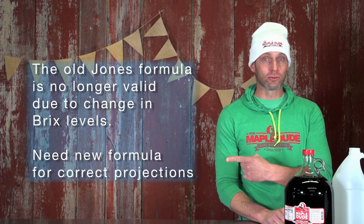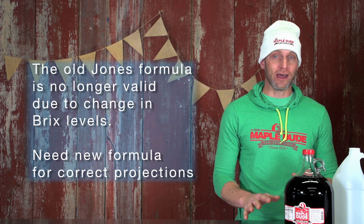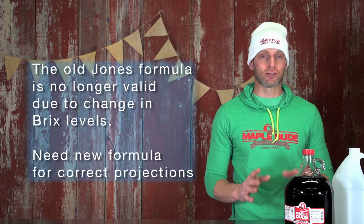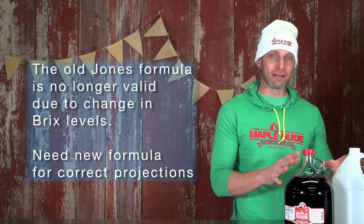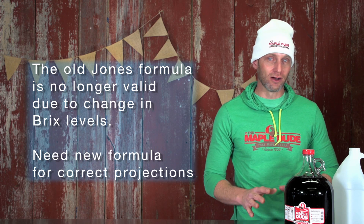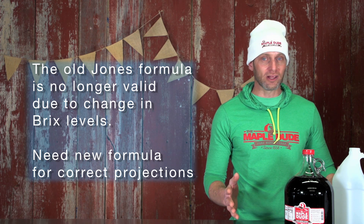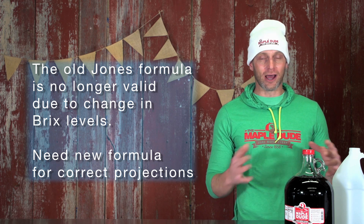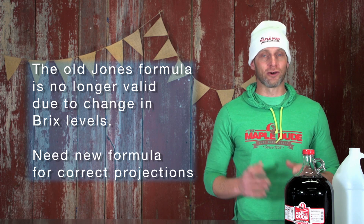So to recap, the old Jones formula is no longer valid because of the change in maple syrup brix from back in Jones' day till now. So we require a new formula to make accurate projections on how our maple syrup yield will turn out.